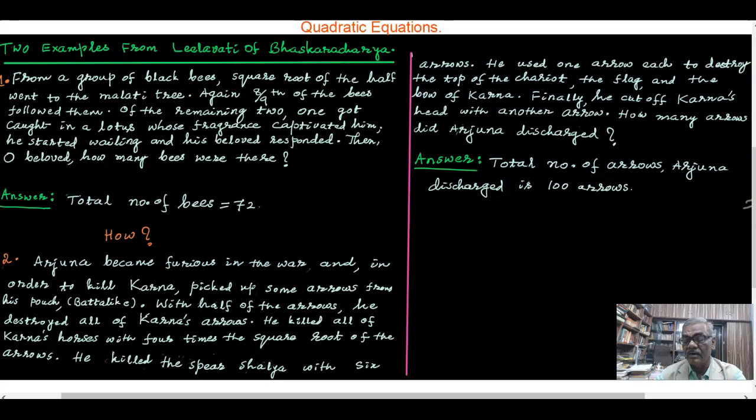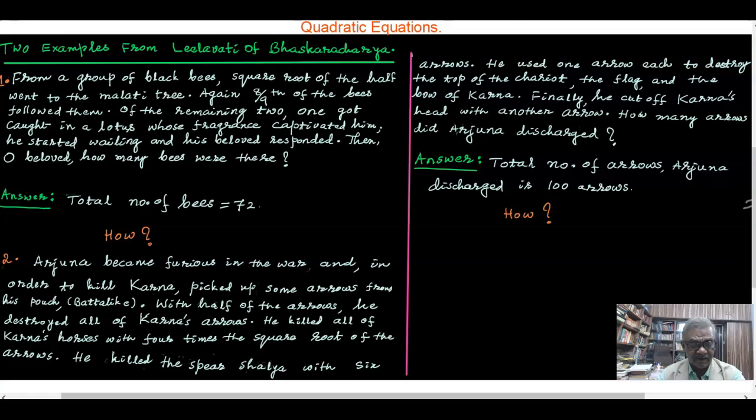And thus for the second one, the answer is total number of arrows Arjuna discharged is 100 arrows. How this number he arrived at, again he took the quadratic equation and solved that quadratic equation to get the solution as x = 100.